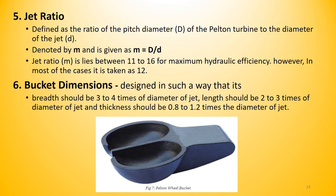For bucket dimensions: breadth should be 3 to 4 times the diameter of the jet; length should be 2 to 3 times the diameter of the jet; and thickness should be 0.8 to 1.2 times the diameter of the jet. An image shows the Pelton wheel bucket with two compartments separated by a wall, which better directs the flow of water.